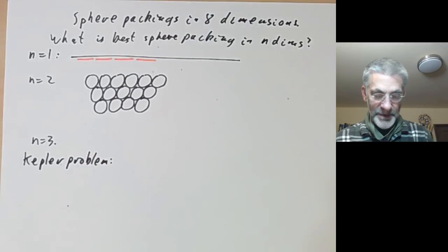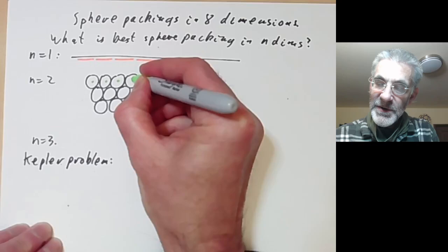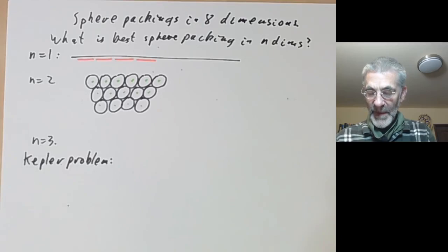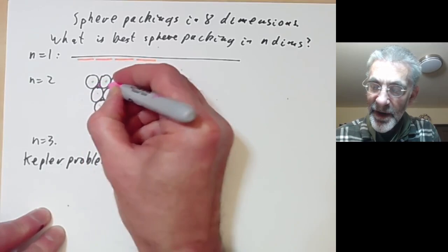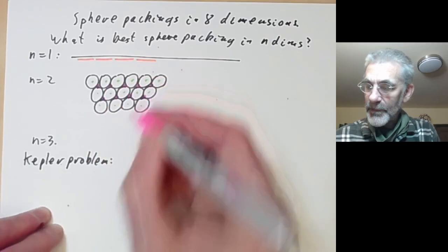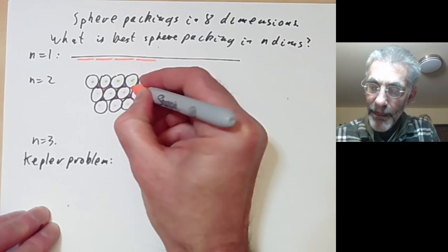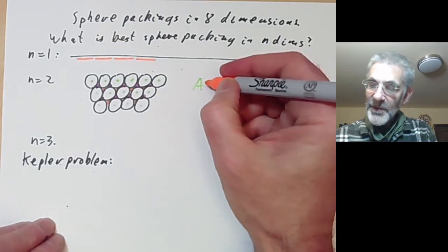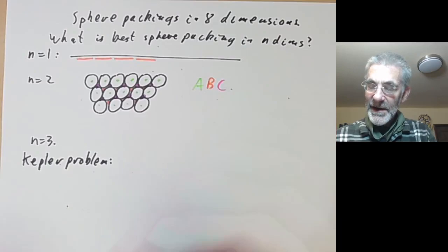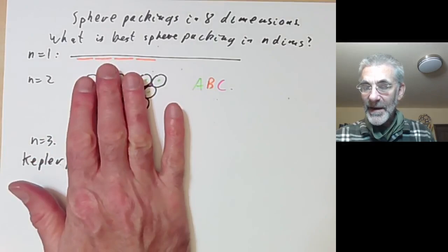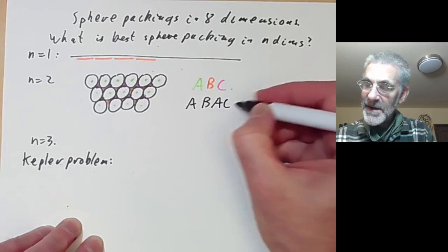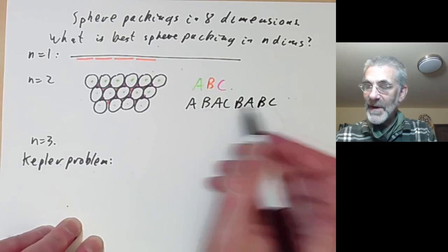There's a pretty obvious way to pack spheres in 3D. If we put a green spot at the centre of circles and think of these as spheres, we want to stack another layer above them. We can put spheres in the gaps, but there are two ways to do this. Calling the green positions A, the orange gaps B, and the pink gaps C, we can describe any sphere packing by a sequence of letters such as A, B, A, C, B, A, B, C and so on, provided we don't use the same letter twice in a row.